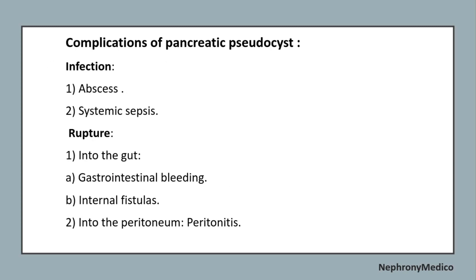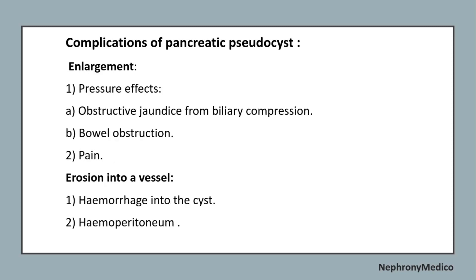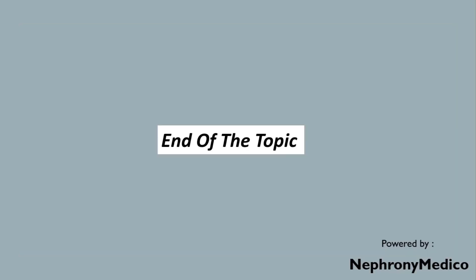Complications of pancreatic pseudocyst include: infection leading to abscess or systemic sepsis; rupture into the gut leading to gastrointestinal bleeding, internal fistulas, or into the peritoneum leading to peritonitis; enlargement causing pressure effects such as obstructive jaundice from biliary compression, bowel obstruction, and pain; and erosion into a vessel leading to hemorrhage into the cyst and hemoperitoneum.